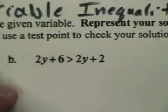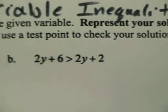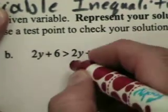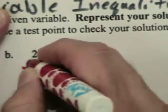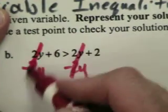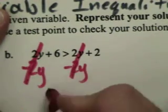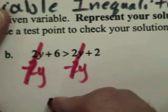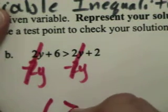Now, next one. See if we can have some fun with this one. Subtract 2y from both sides. And I'm going to get... Oh. They disappear. So 0 and 0. So this is just going to be 6 is greater than 2.